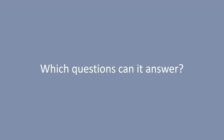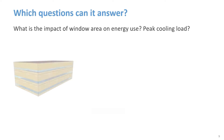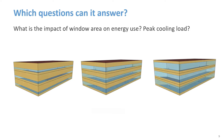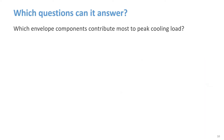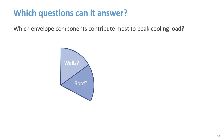Let's look at a few examples of design questions that might be addressed with a simple box model. What is the impact of window area on energy use or on peak cooling load? Fenestration design is certainly a fundamental design decision. Since simple box modeling can be very quick, it can provide feedback early while the design concept is still being developed. Another question: which envelope components contribute most to peak cooling load? This information can help optimize the envelope design and focus investment on components with the most impact.